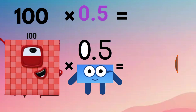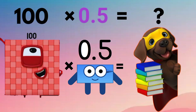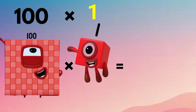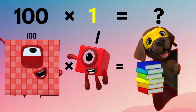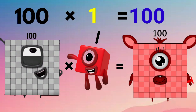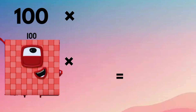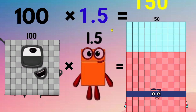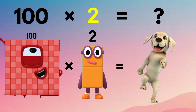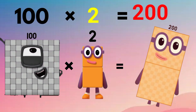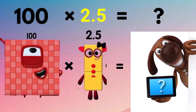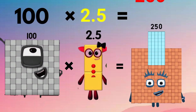100 x 0.5 equals 50. 100 x 1 equals 100. 100 x 1.5 equals 150. 100 x 2 equals 200. 100 x 2.5 equals 250.